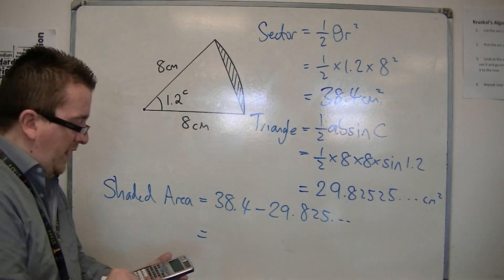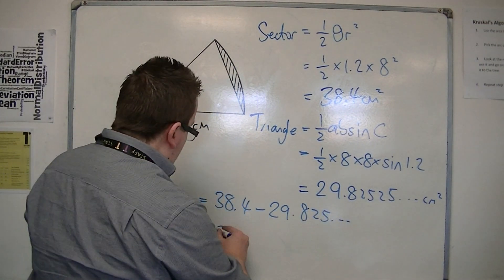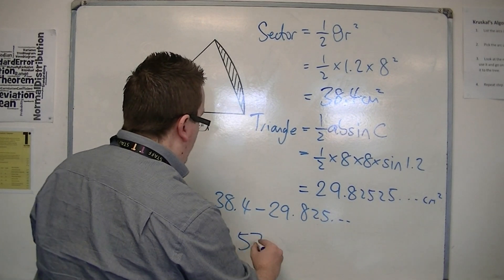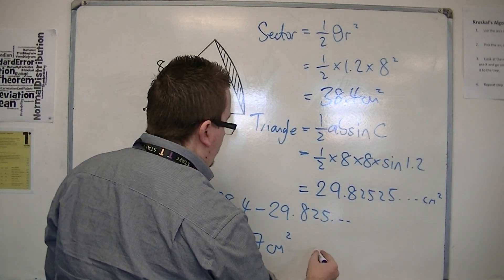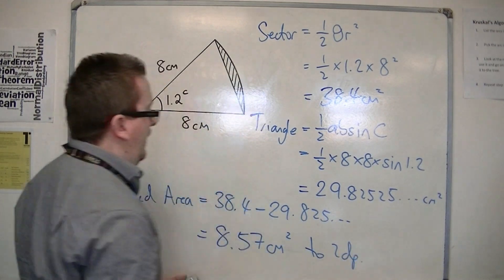So 38.4 take away the answer is 8.57 square centimeters to two decimal places.